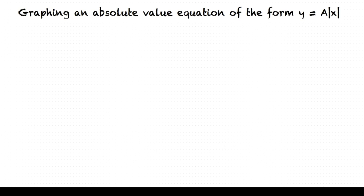To graph an absolute value function of the form y equals a times the absolute value of x, first plot the vertex, then plot a point on either side of the vertex, and finally draw lines connecting the vertex to each of those points. Let's break it down.